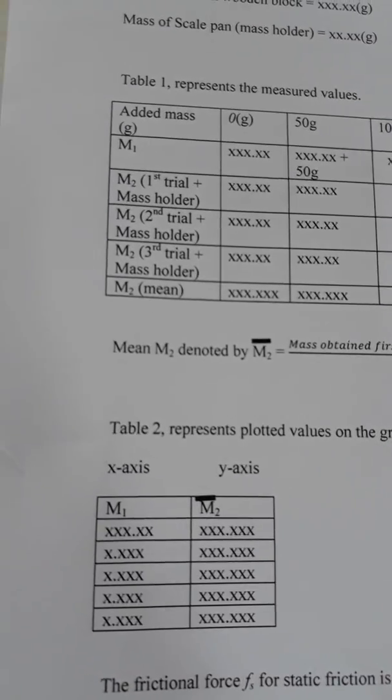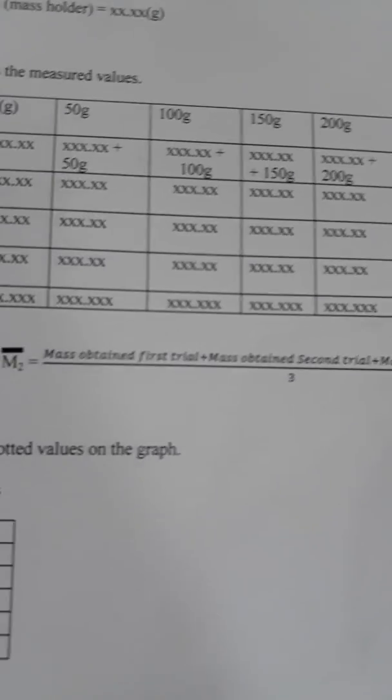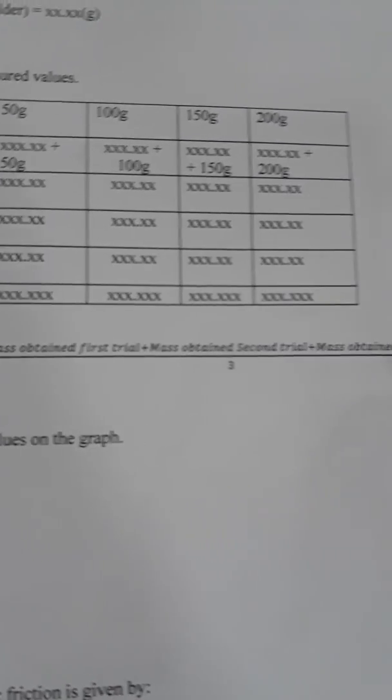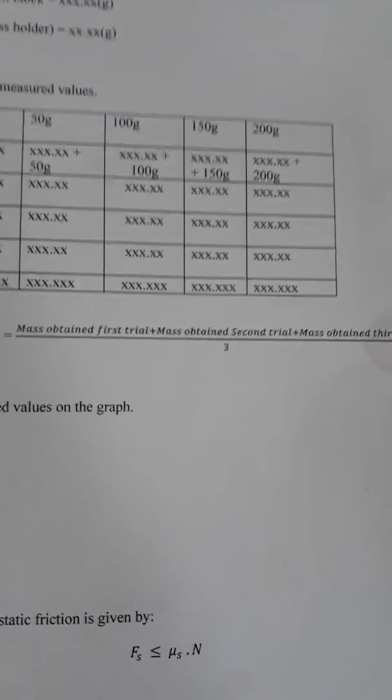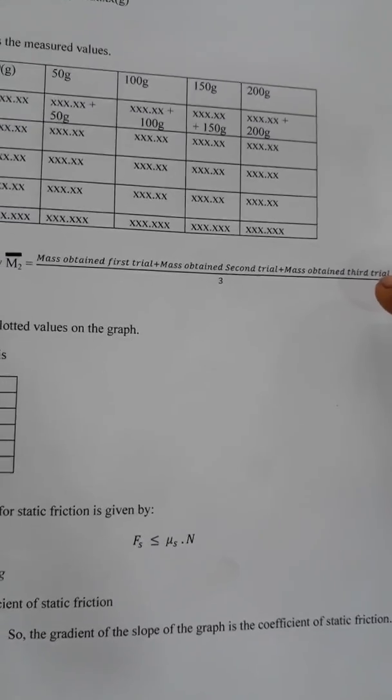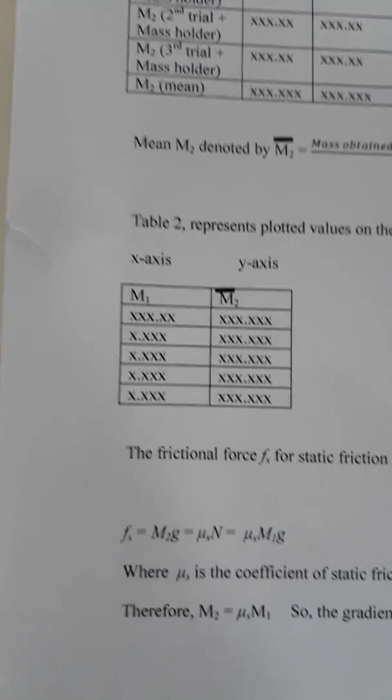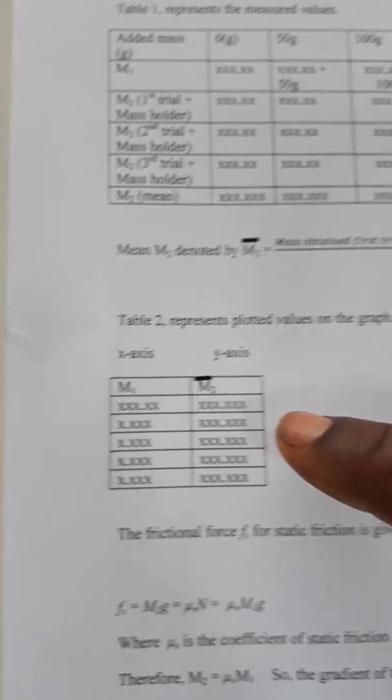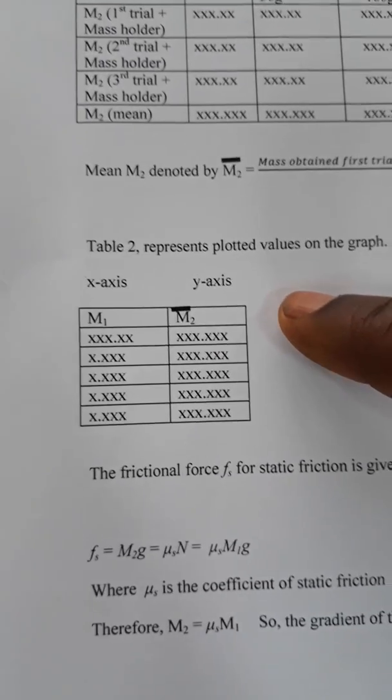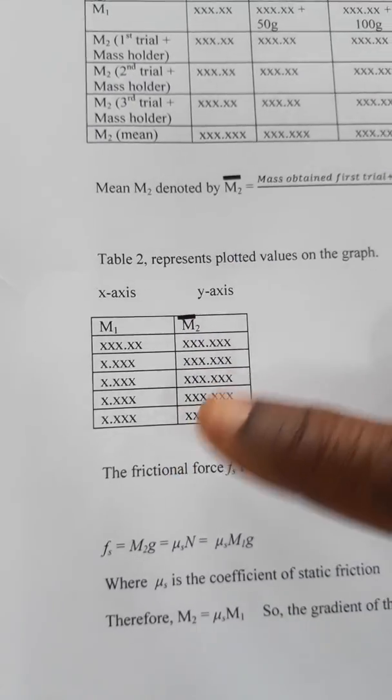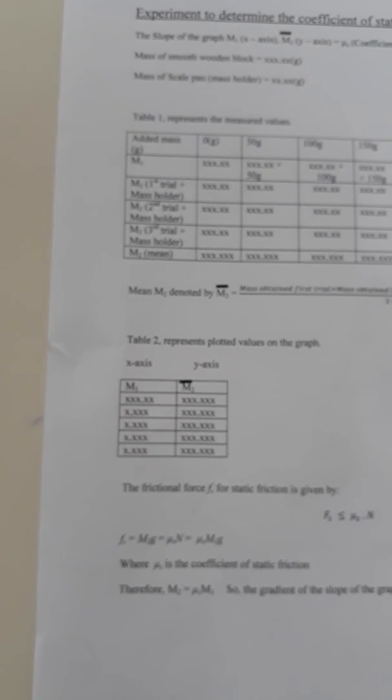Now, my M2, I have to get the mean M2. Remember, since I did three trials, I will have to add my M2, all the masses for M2 and divide by 3 to get my mean M2. After obtaining my mean M2, I will now put all my obtained values, x axis and y axis. So my M1, I have all my obtained values for M1; M2, all my obtained values for M2, that's the mean M2. After that, I will now plot the value of my M1 against M2.